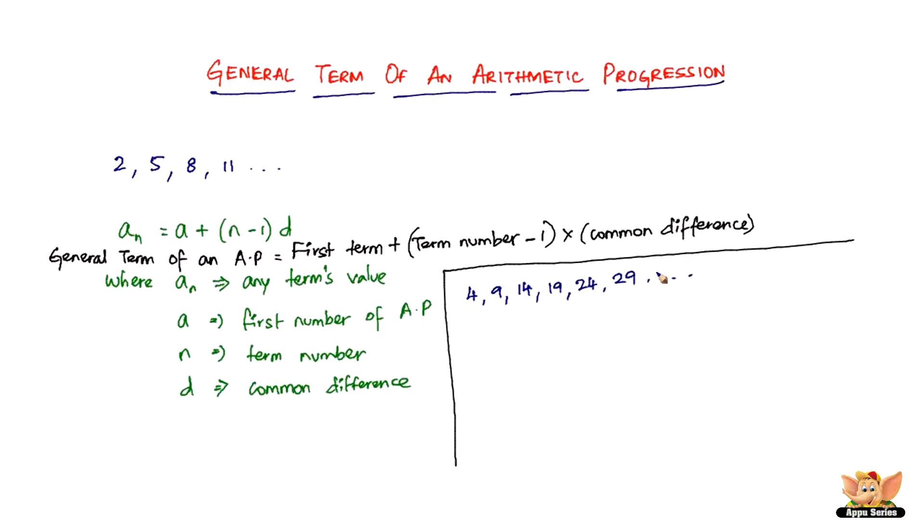So you're going to write a_n = a + (n - 1)d. So you need the 10th term, so replace n by 10. So a_10 = 4 (in this case, a is 4), n is 10, and d—you can see 9 - 4 is 5, 14 - 9 is 5, 19 - 14 is 5—so it is 5. So you just solve this: 4 + 9 × 5, which is 4 + 45.